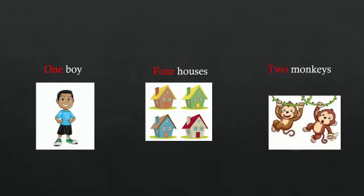One boy, four houses, two monkeys. Here, one, four and two are the numbers that describe boy, houses and monkeys.